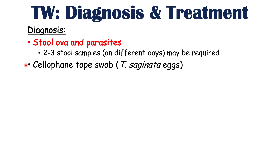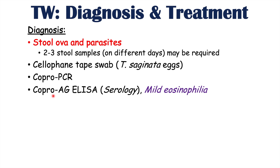Another way to diagnose is by using cellophane tape, which can help diagnose particularly Taenia saginata eggs. Another way is through copro-PCR, looking for the genetics of a tapeworm. Another method is copro-Ag ELISA, which is serology testing to see if a patient is infected with a particular tapeworm. When looking at other blood work, a patient often has mild eosinophilia — a mild increase in eosinophils — because eosinophils are important in fighting parasitic infections.